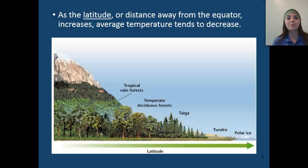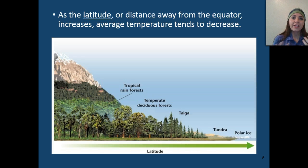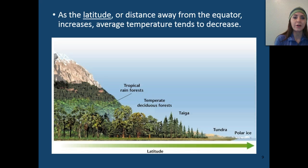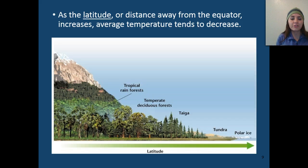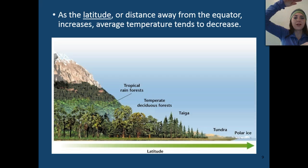One of the factors influencing biomes and where animals and plant life can live is latitude — the distance away from the equator. As latitude increases, the average temperature tends to decrease. The further away we get from the equator, the lower the temperature tends to be. Near the equator you have tropical rainforests, but going way up north you'll have lots of ice and snow.